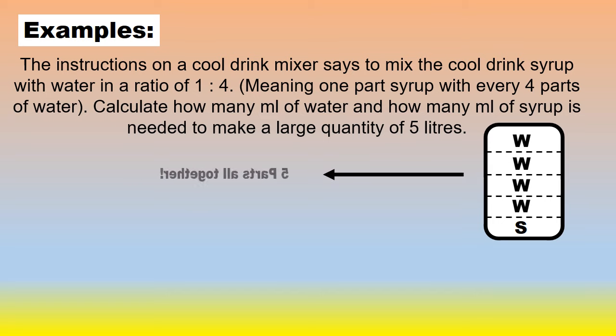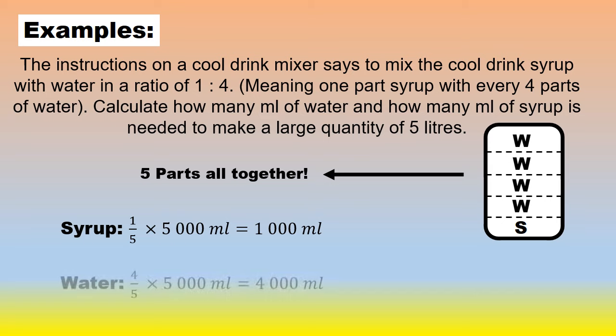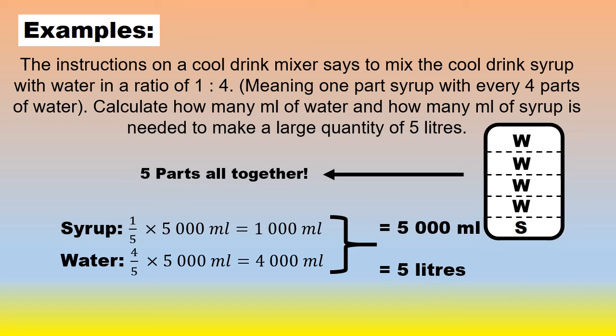So 5 parts all together. For the syrup, the syrup was 1 out of the 5 parts times 5,000 milliliters. So we need 1,000 milliliters or 1 liter of syrup. With the water, we need 4 out of the 5 parts of the 5,000 milliliters, and that gives you 4,000 milliliters or 4 liters. I hope you understand why we add all the parts together to get the total number of parts in that given situation. And then you say this person gets so many parts, that person gets so many parts, and you work it out as a part of the total.